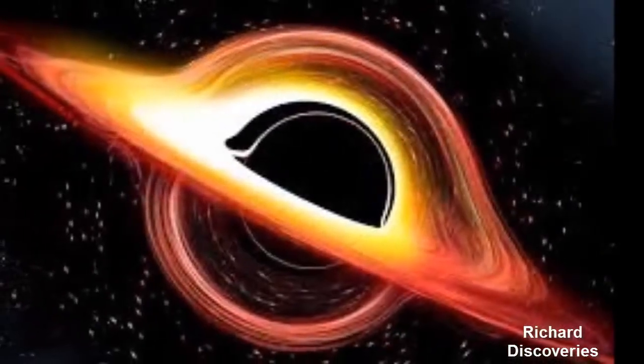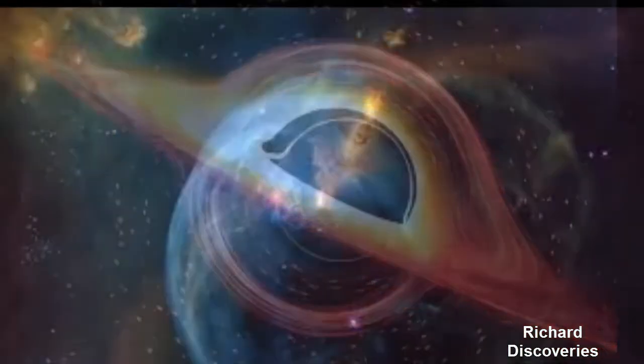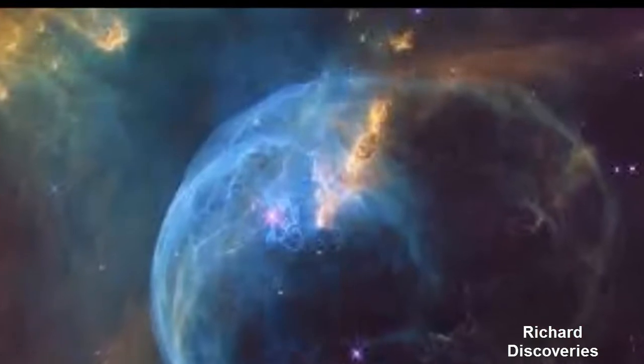collide with particles in our upper atmosphere. The newly formed muons rain down at about 10,000 per square meter of the Earth's surface every minute.